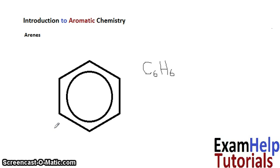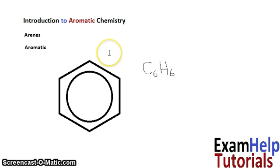Benzene gives off a very strong smell. However, not all aromatic compounds are fragrant — the original thought was that they were, but we've come to know that's not the case. So 'aromatic' is just used commonly for any compound containing a benzene ring. Arenes can also occur naturally in materials such as crude oil and coal, and we can produce arenes from these in refineries.